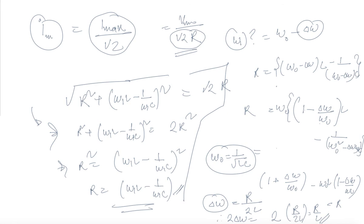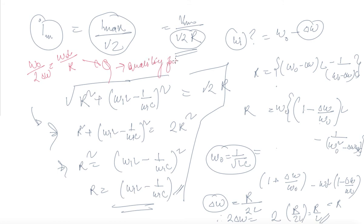The sharpness factor is omega_naught upon (twice del_omega), which equals omega_naught·L by R. The ratio omega_naught·L upon R is called the quality factor Q. So twice del_omega equals omega_naught upon Q.